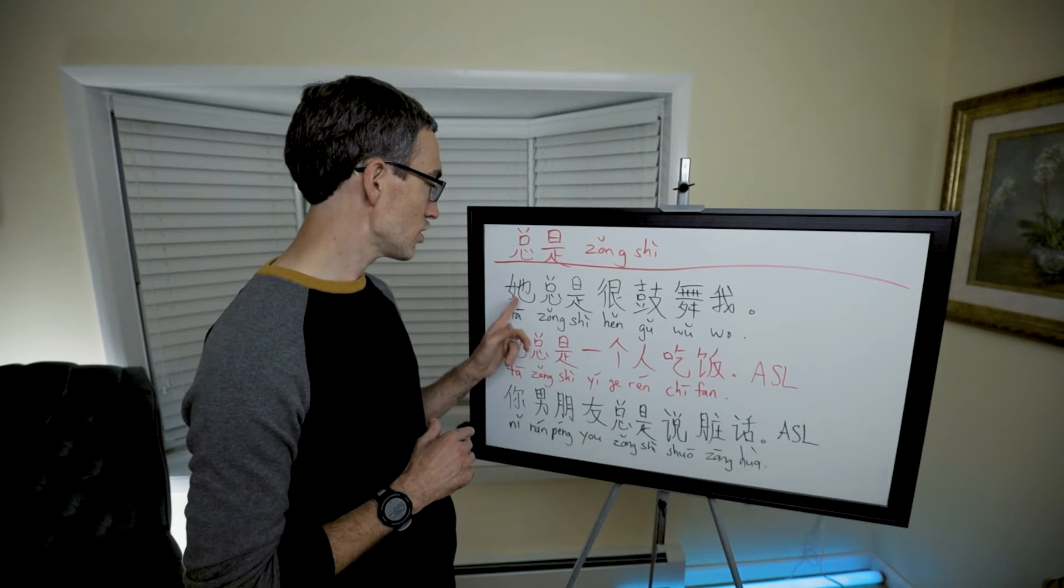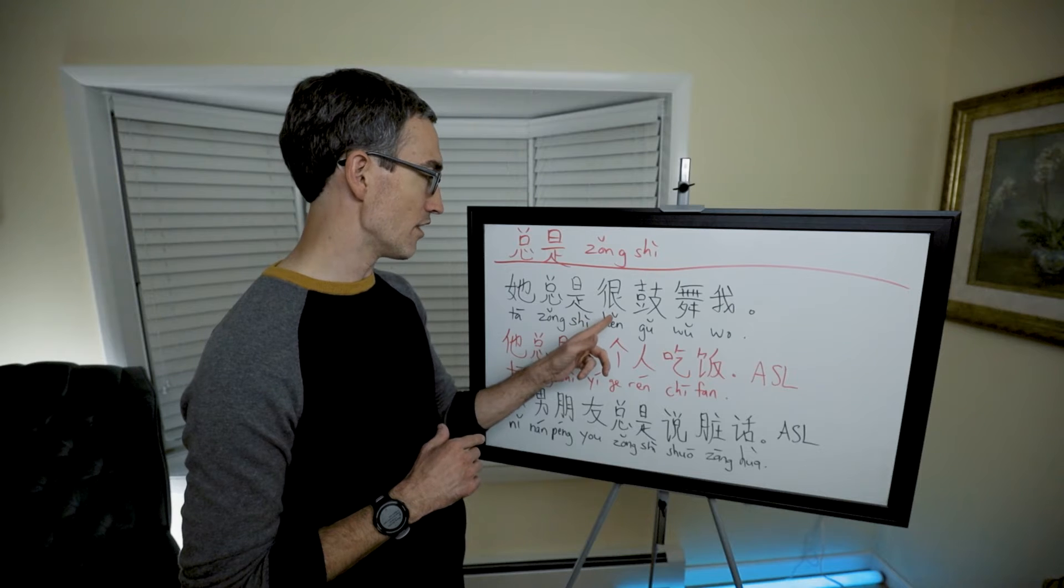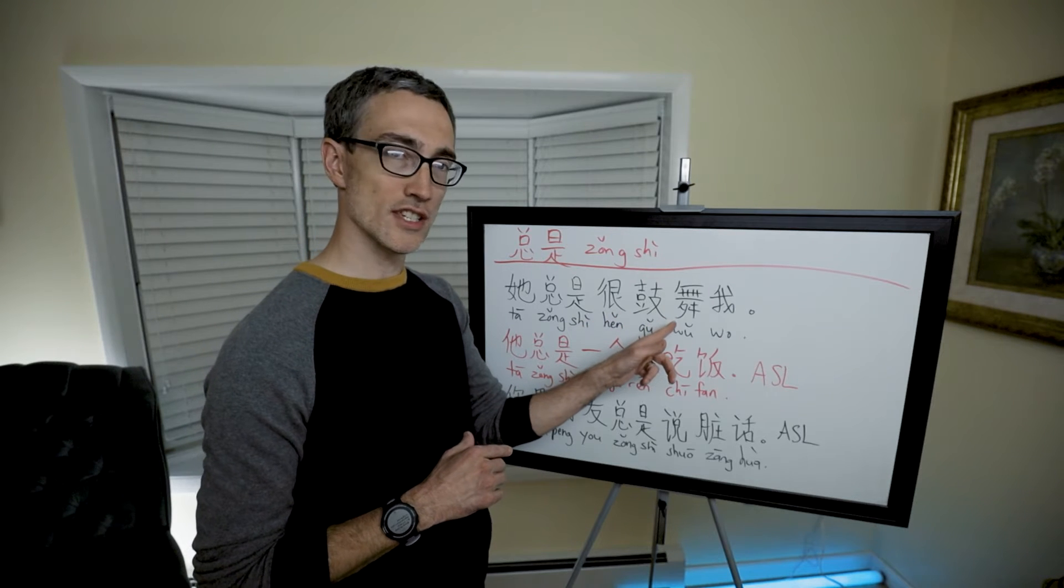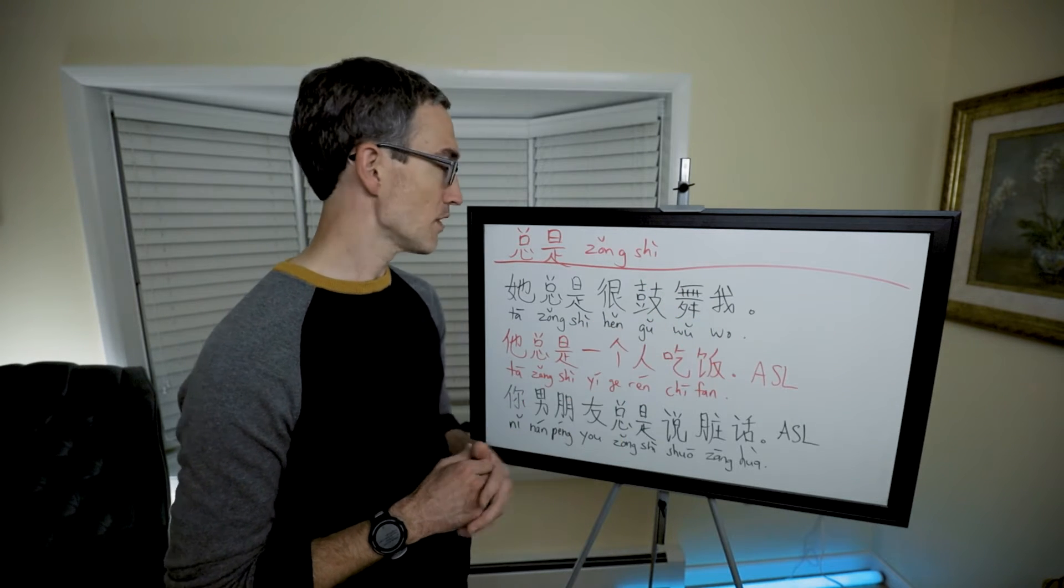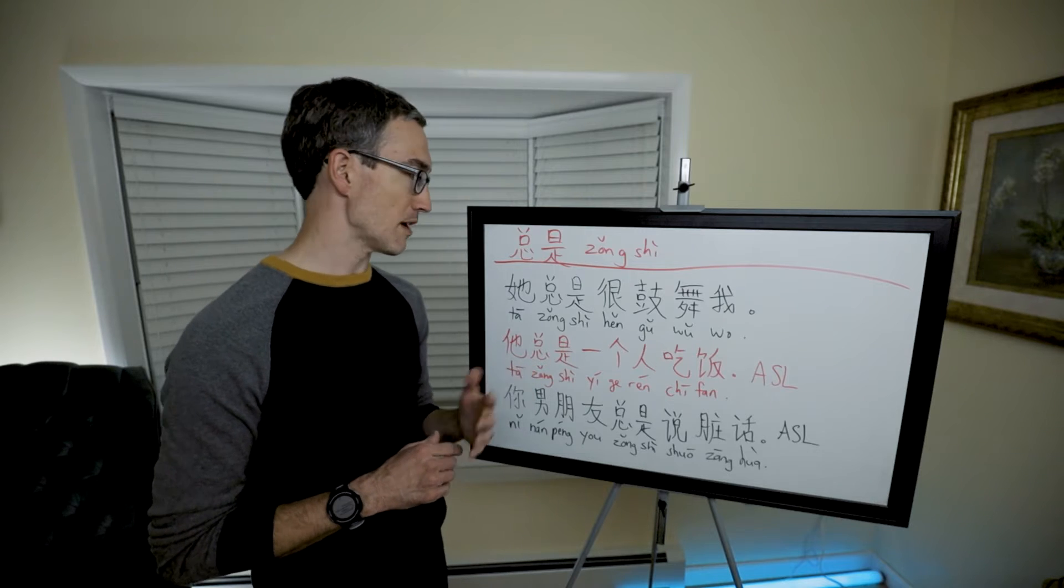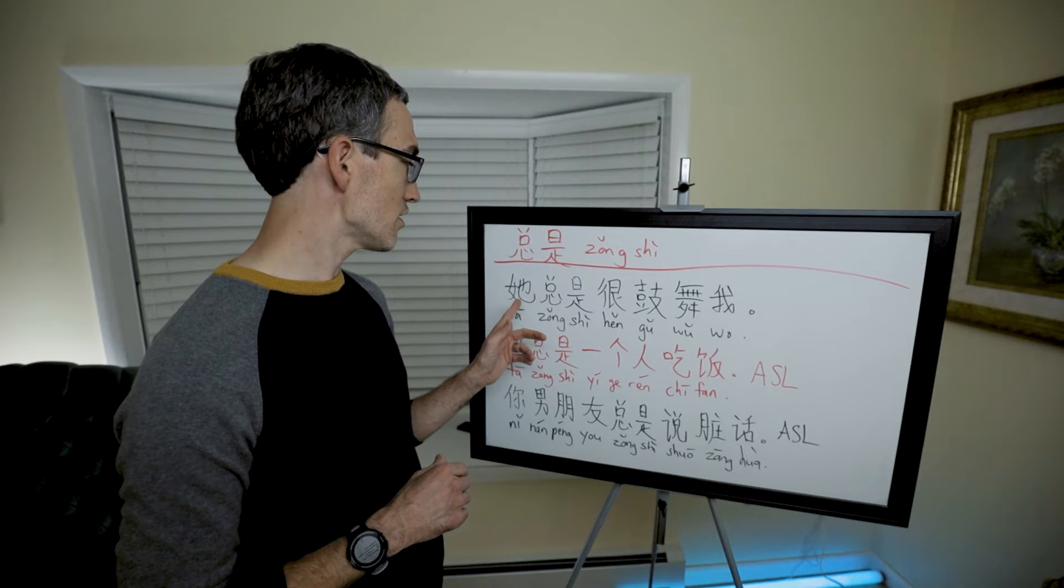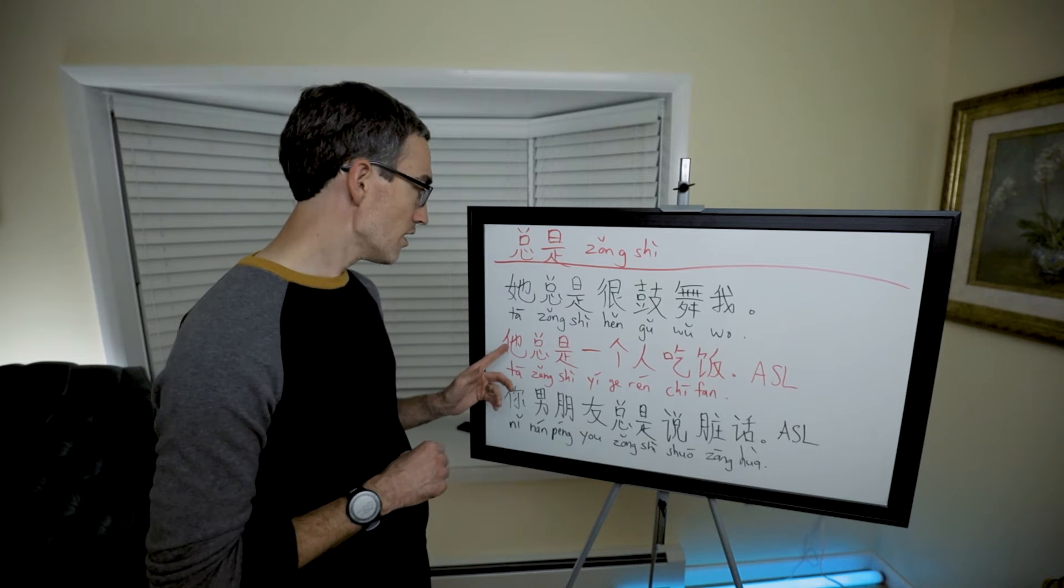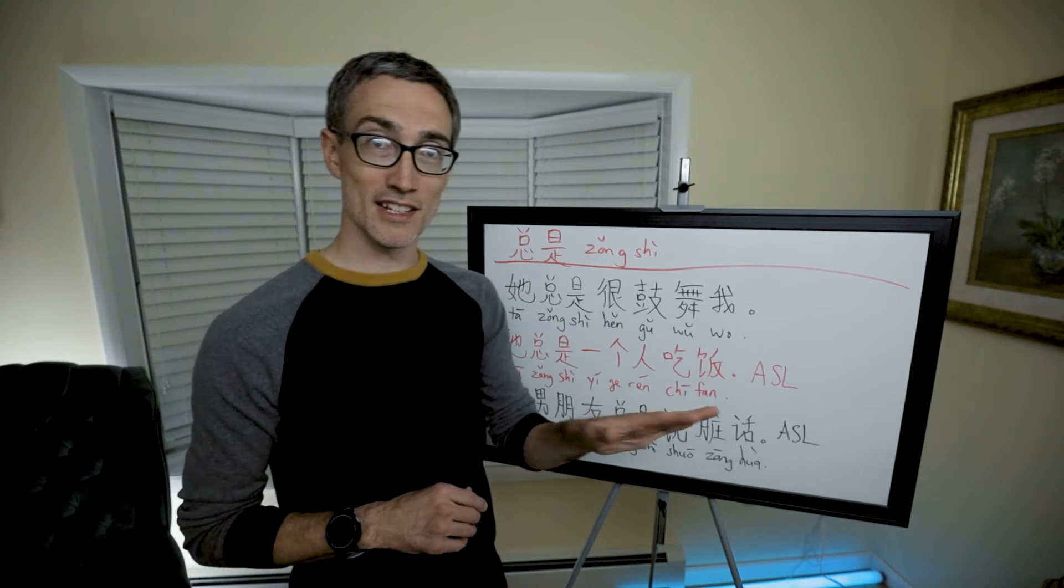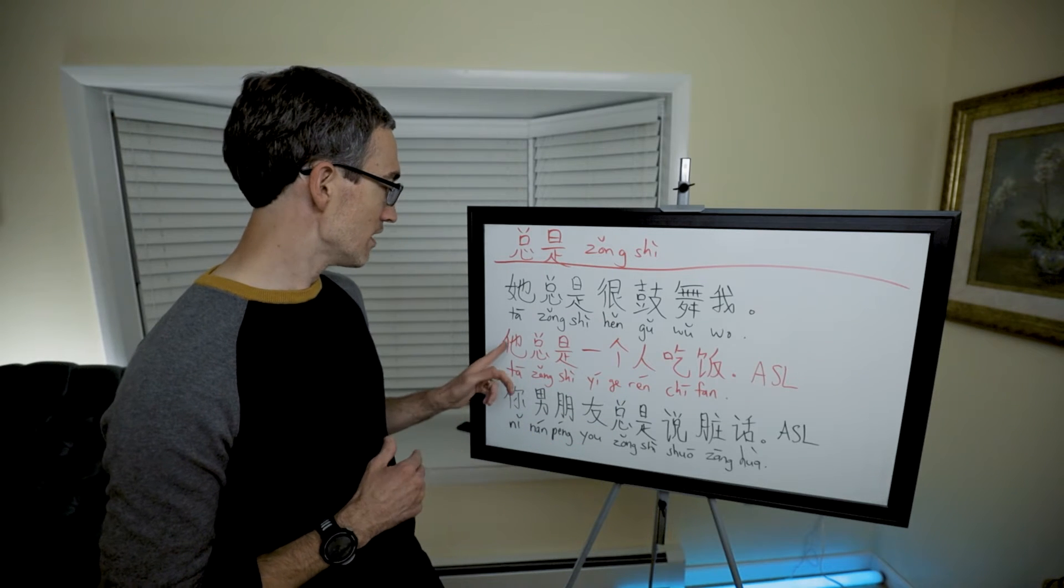她总是很鼓舞我. 她, she, 总是, always, 很, very, 鼓舞, encourages, 我, me. So she always really encourages me, or she's always very encouraging to me. 她总是很鼓舞我. So that is positive, right? It's saying something good. She always encourages me.